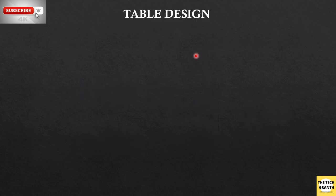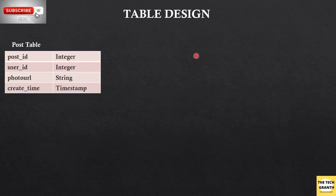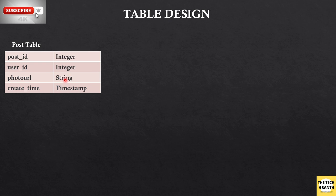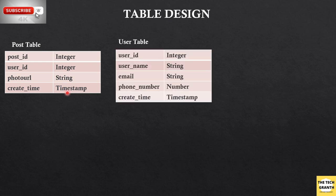Now let's discuss table design - the basic tables required to cover our requirements. The first is the post table, which stores any photo uploaded as a post. It has a unique post ID, a user ID of the uploader, the photo URL (the path on storage), and a create time. You can extend this table to include location latitude and longitude, and a caption column for any photo.